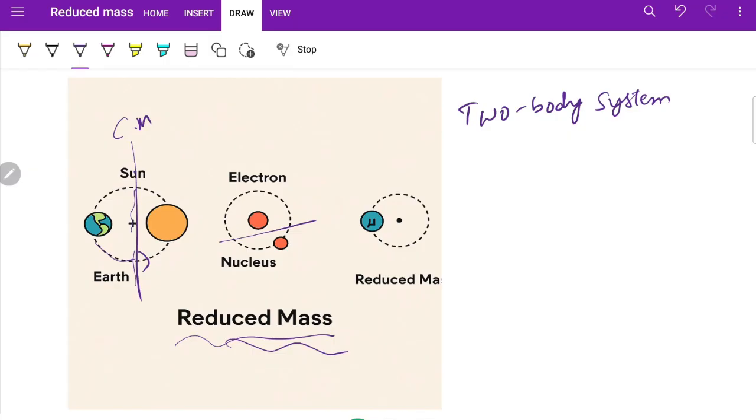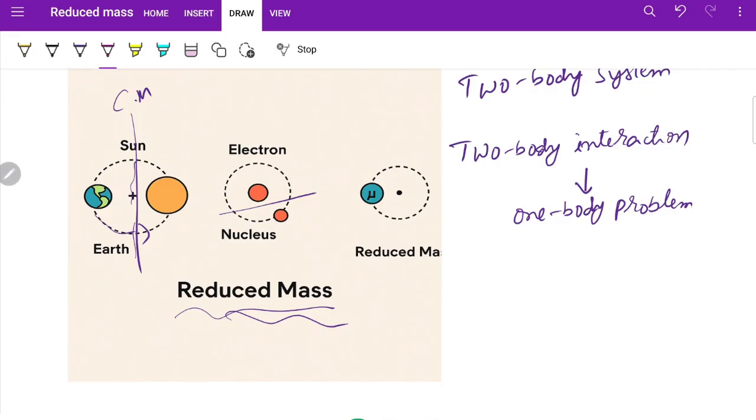It allows us to reduce a complex two-body interaction into an equivalent one-body problem. This makes the mathematics very simpler while retaining the total physics concept unchanged. Reduced mass is denoted by mu, which is given mathematically as m1 times m2 divided by m1 plus m2, where m1 and m2 are the masses of the two bodies.